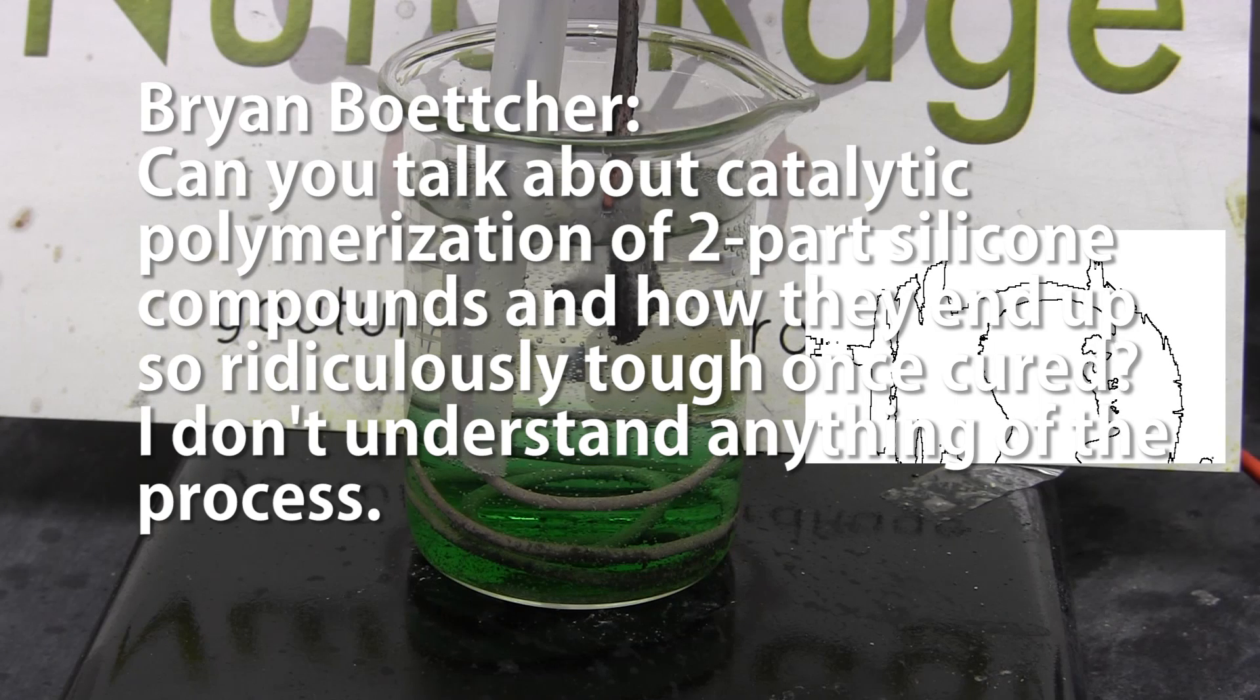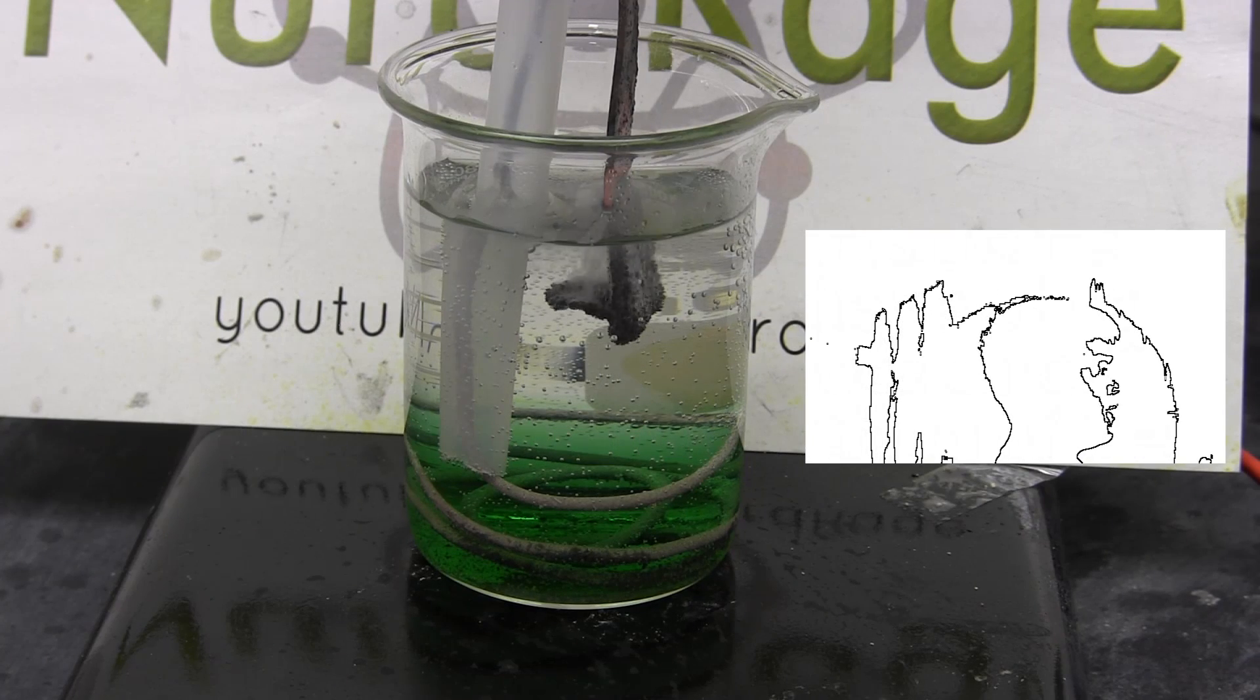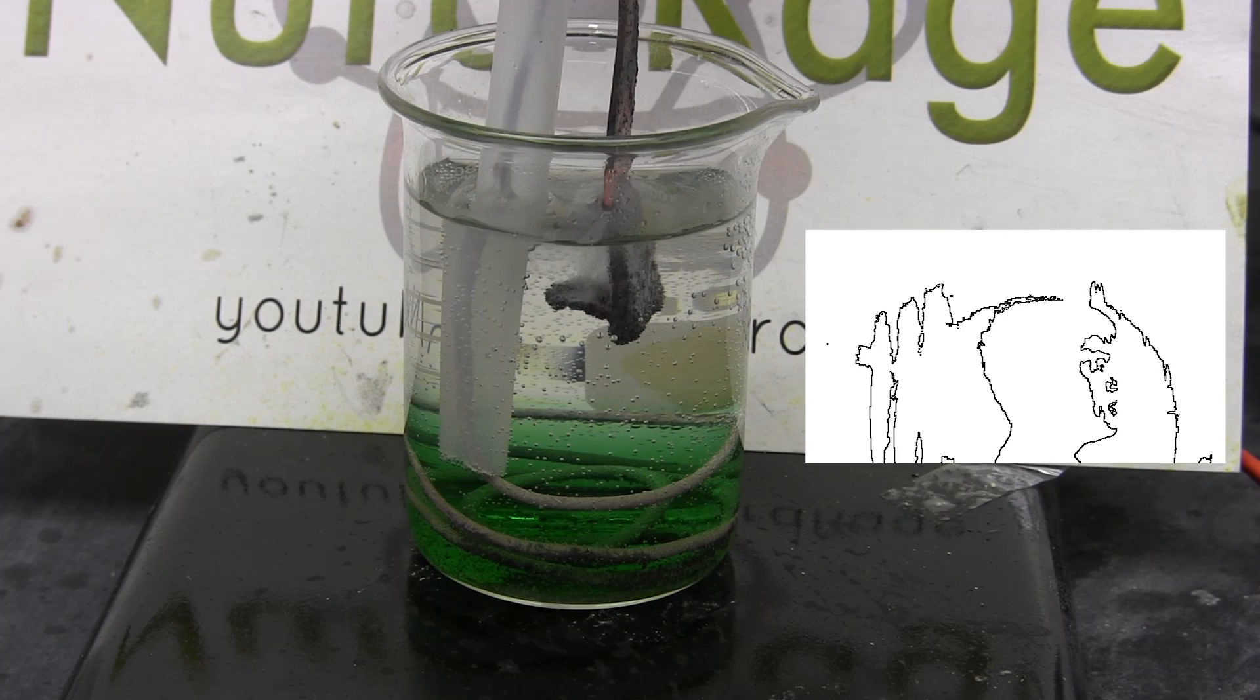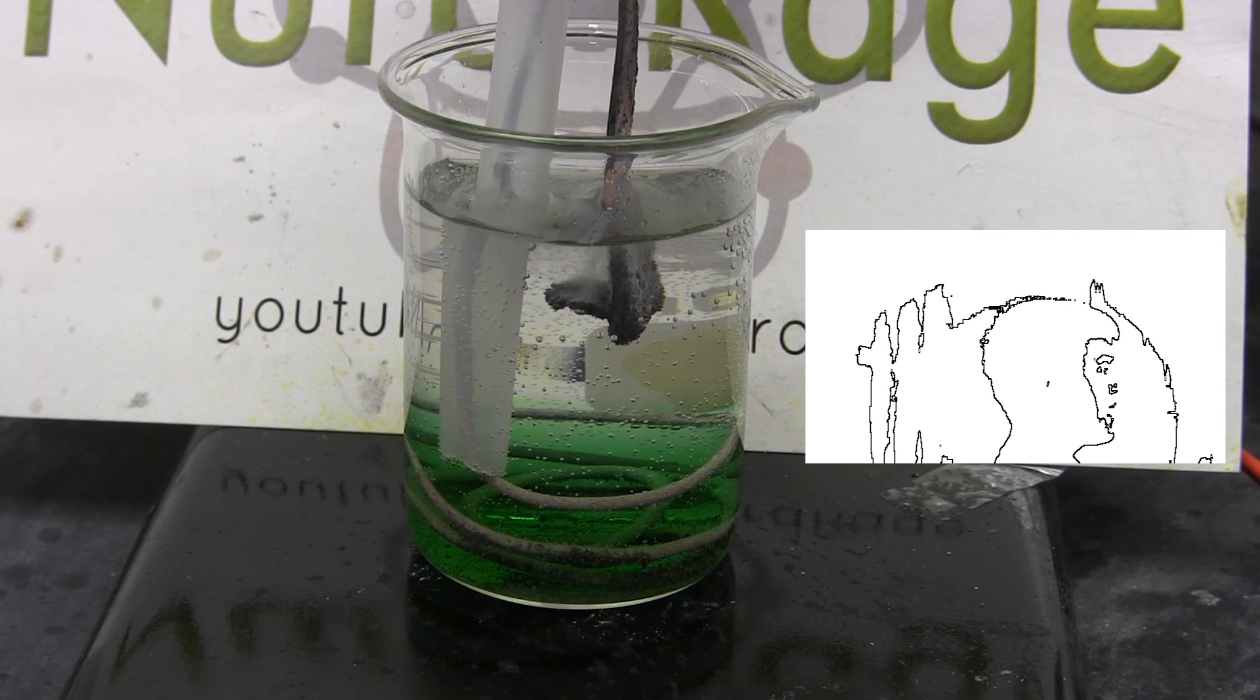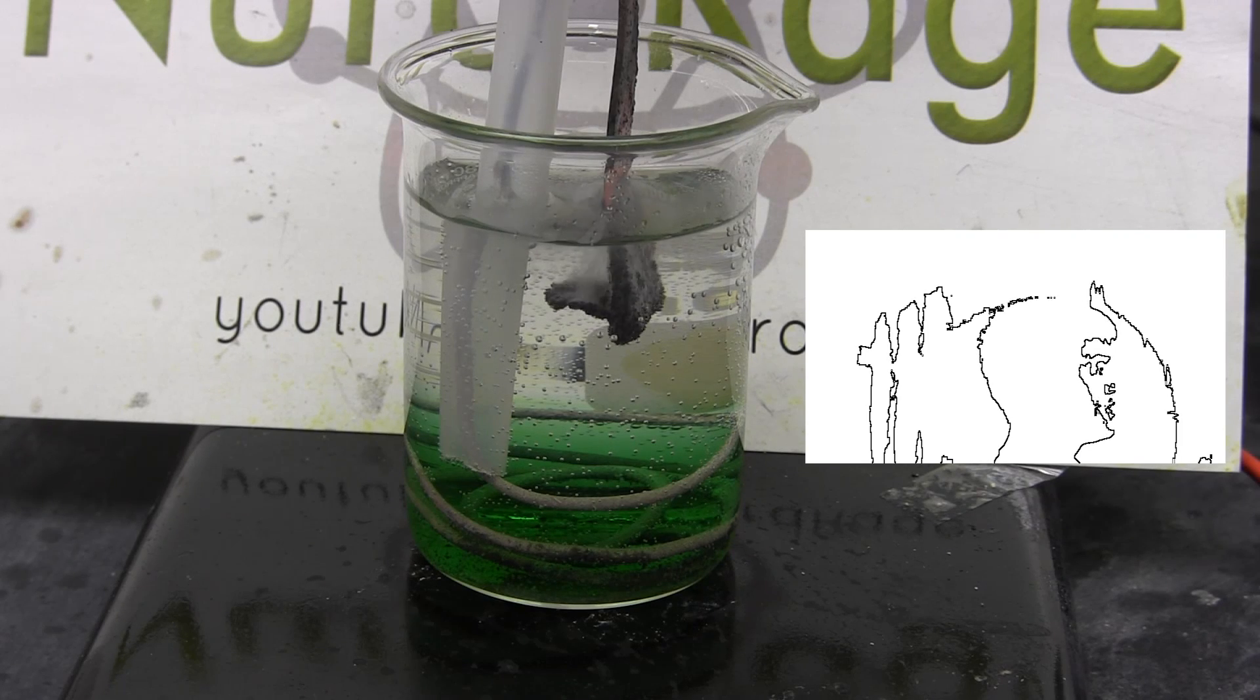Okay, first we need to understand how silicone polymers in general work. In one-part silicone compounds that cure on air you have monomers of silicone atoms connected to two organic groups and two leaving groups. Usually the organic groups are methyl groups and the leaving groups can be halides like chlorine or acetate. On air moisture comes in and reacts with the leaving groups and links together two silicone atoms with an oxygen to form a siloxane. These form very long polymer chains and that's the cured silicone adhesive.